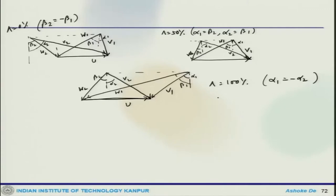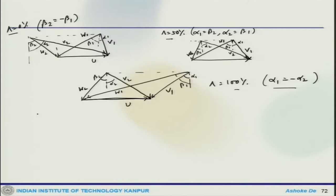Let us continue the discussion of the degree of reaction in axial flow compressor. We stopped at the different velocity triangles for different degrees of reaction. One can see how the blade angles vary for 0 percent degree of reaction, 50 percent, and 100 percent, and what the blading pattern or angles would be. This is a very important aspect of blade design, as it dictates the rotor blade design and the loading on the rotor blade.